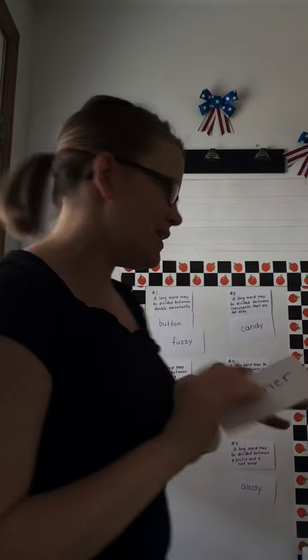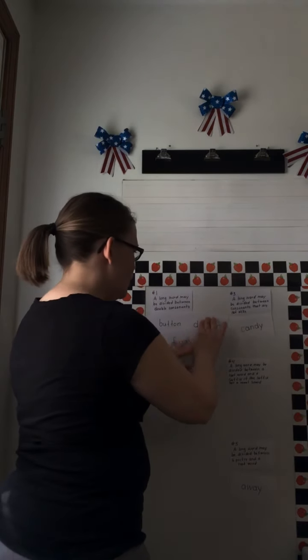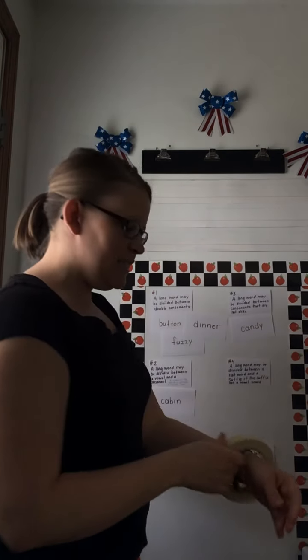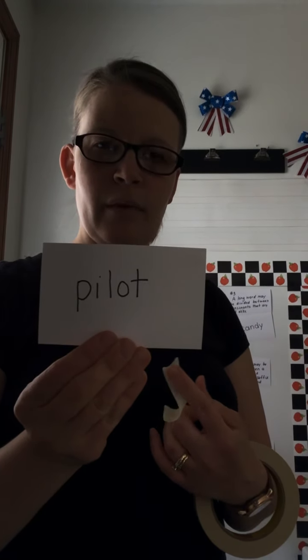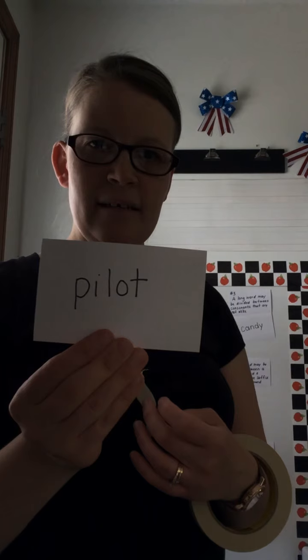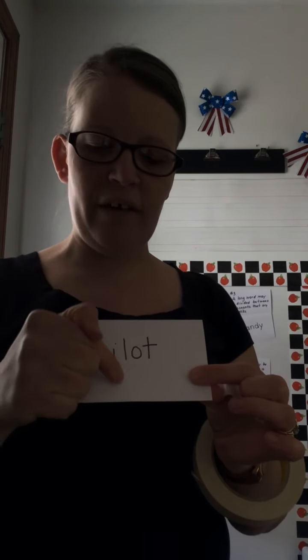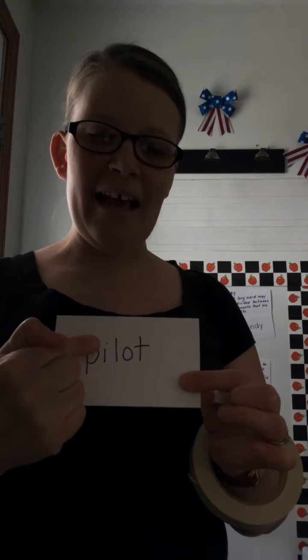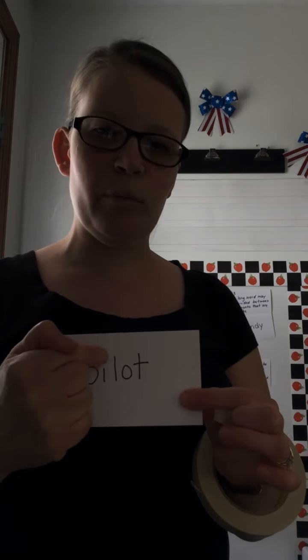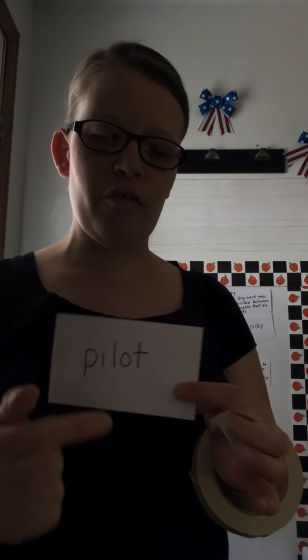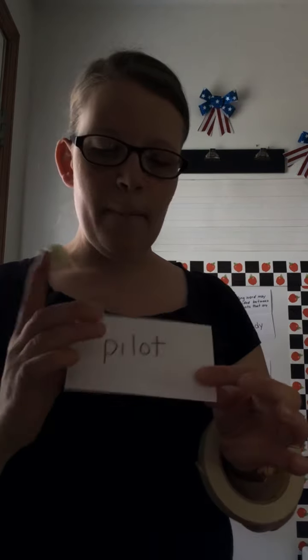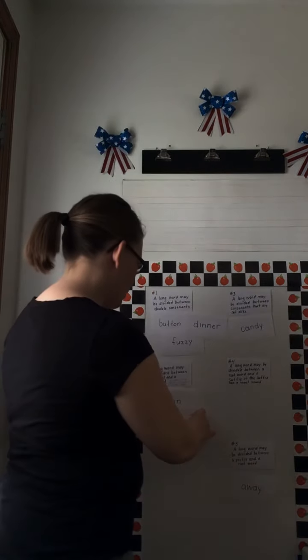'Dinner' — between the double consonants, rule one. Din-ner. Next word: 'pilot.' This is a situation where you divide between the vowel and the consonant, and the vowel at the end of the syllable is long. That's what makes our I long — 'pī-lot.' Rule two.